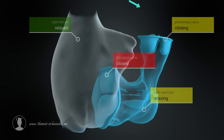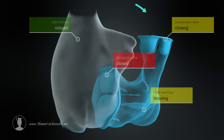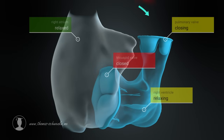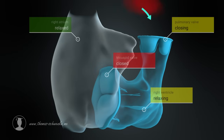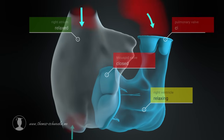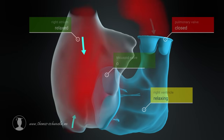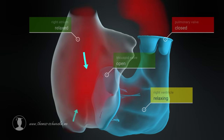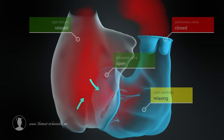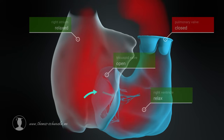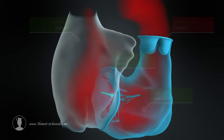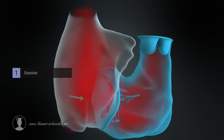This causes the pulmonary valve to close, as the pressure in the pulmonary artery is higher than the pressure inside the ventricle. The tricuspid valve opens, allowing blood to flow from the atrium into the ventricle. Now the cycle begins again.